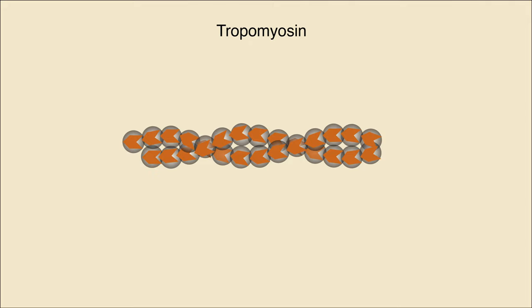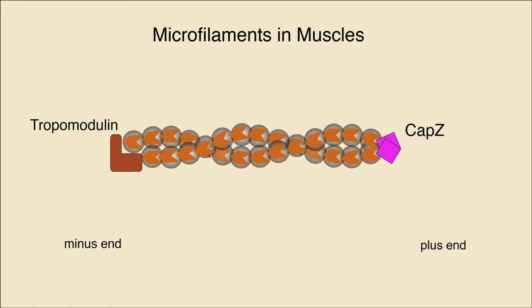A fourth protein, tropomyosin, binds the sides of actin to stabilize the filament. The combination of proteins also matters. In muscle cells, actin filaments are surrounded by CapC on the plus end, tropomodulin on the minus end, and tropomyosin on the sides, creating very stable filaments needed to resist the force of contraction.